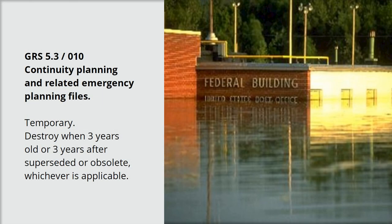Record schedules help us ensure that we have the information we need when we need it. By using the same record schedules for the types of records we all share across the government, we ensure consistency and continuity across departments and agencies. For example, GRS 5.3010 — Continuity planning and related emergency planning files — is temporary: destroy when three years old or three years after superseded or obsolete, whichever is applicable.